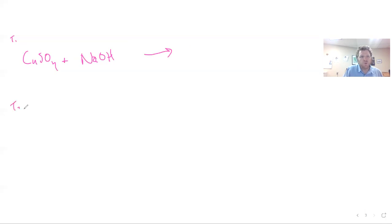Trial number two, on the other hand, you're mixing 25 mils of copper sulfate, again, CuSO4, and 50 mils of NaOH.